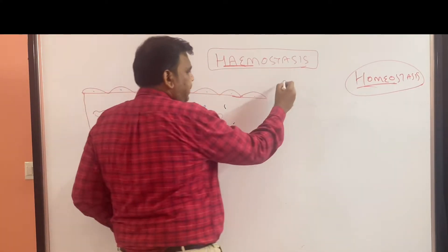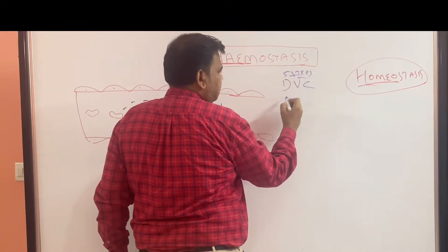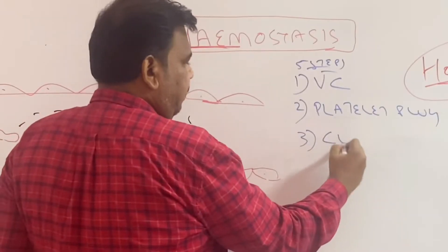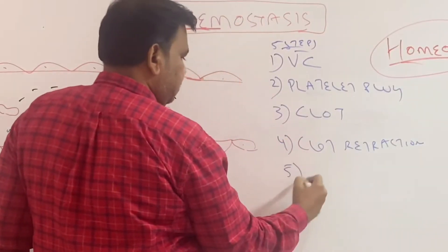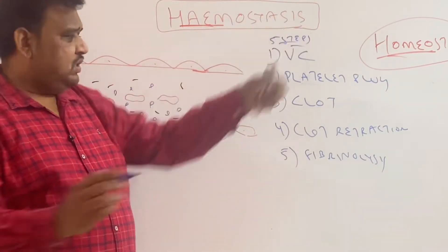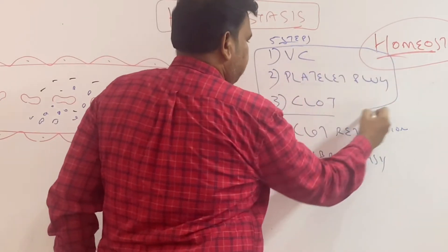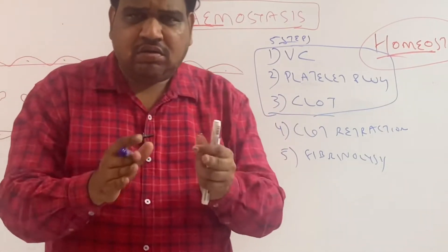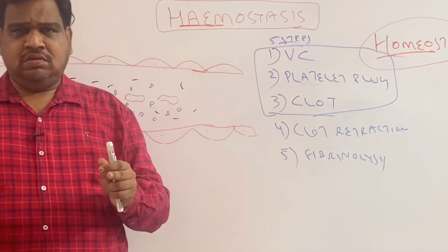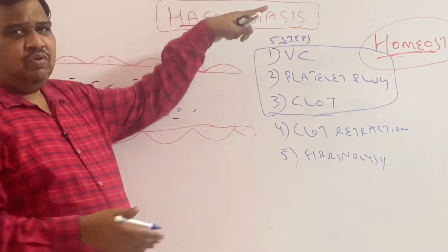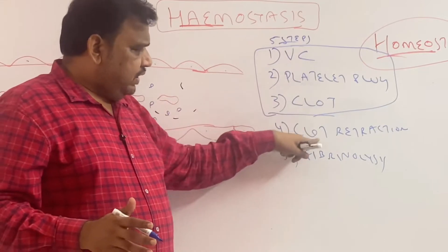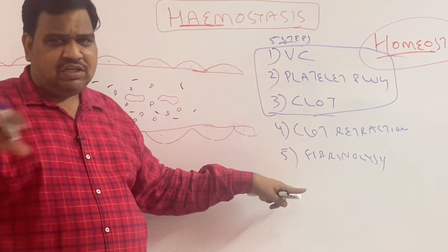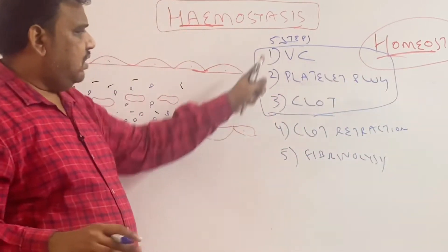Today we will discuss about hemostasis. The five main steps involved in hemostasis are: vasoconstriction, platelet plug formation, clot formation, clot retraction, and fibrinolysis. Some books will give only three steps — up to the formation of clot — as hemostasis. The formation of clot is called coagulation or clotting. Coagulation is a part of hemostasis, and after the clot forms, clot retraction and fibrinolysis follow.